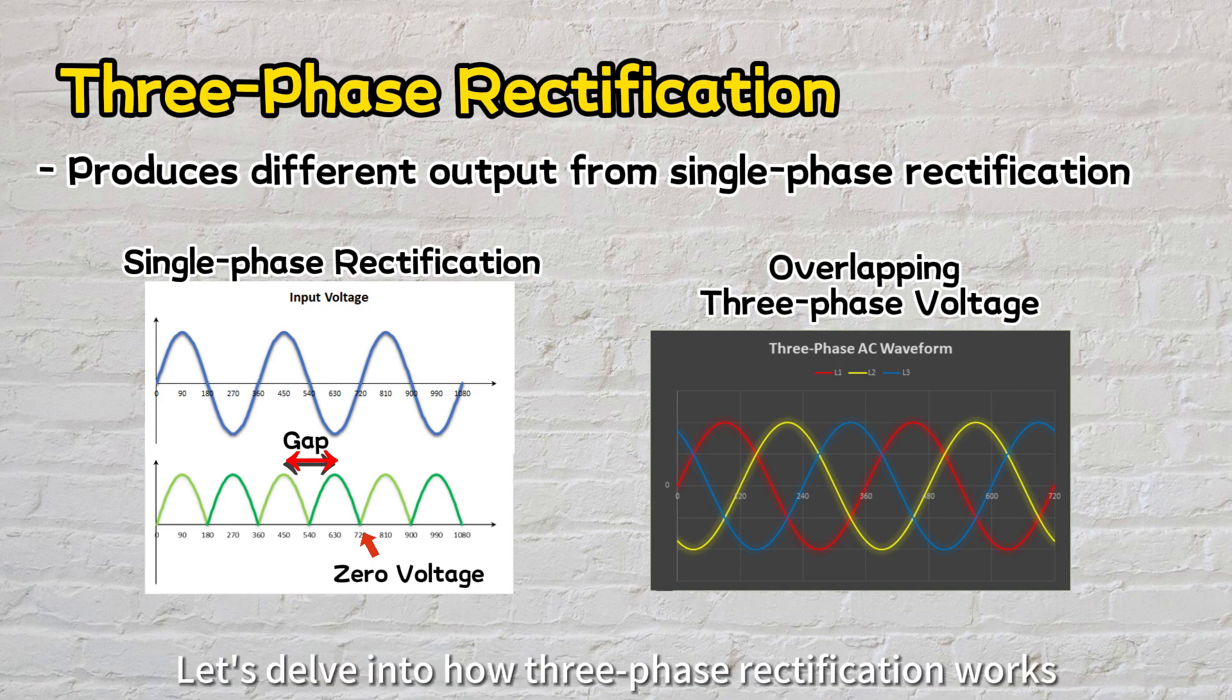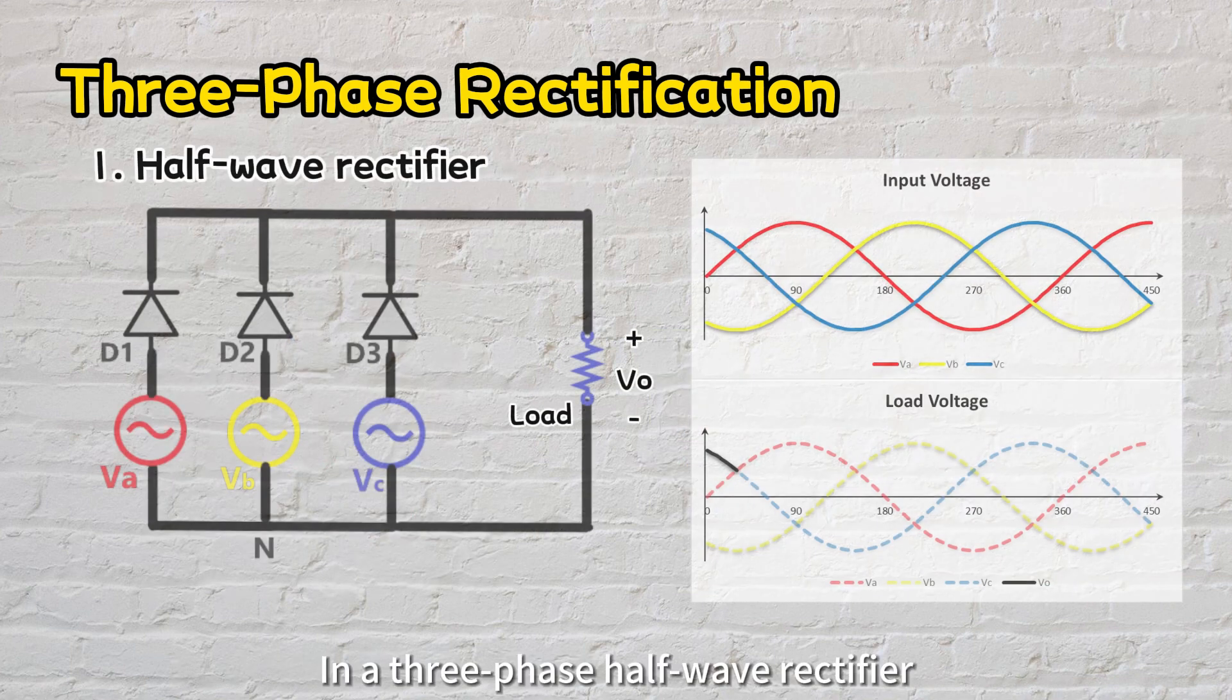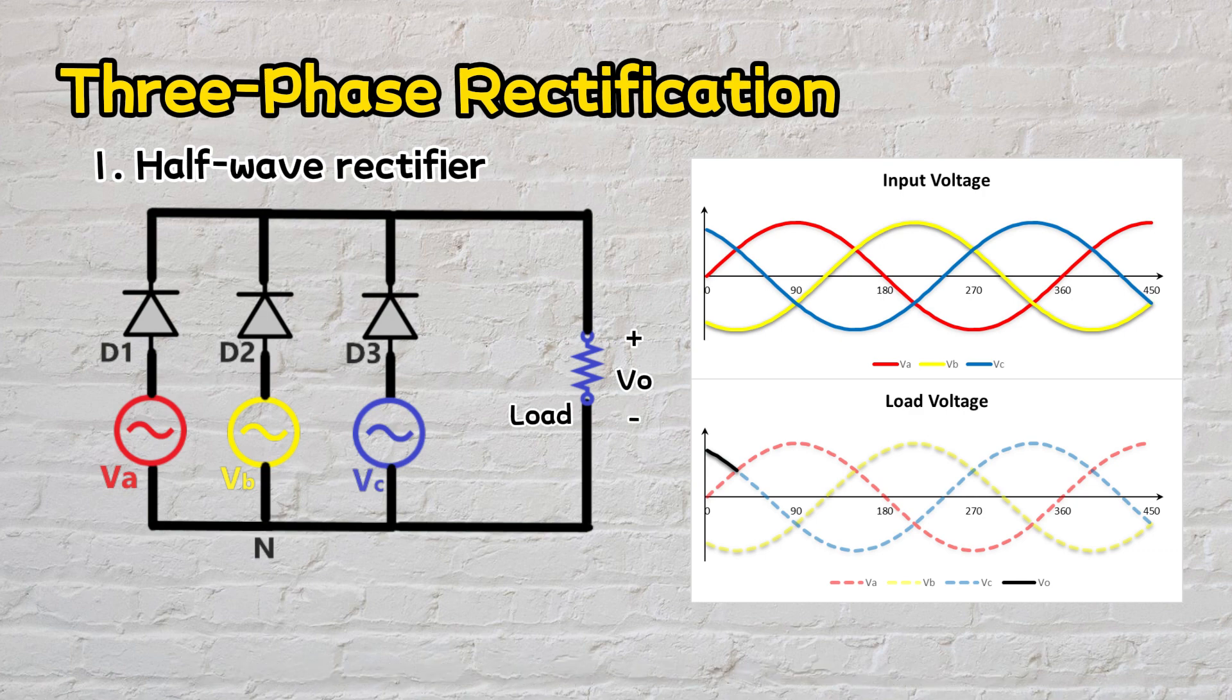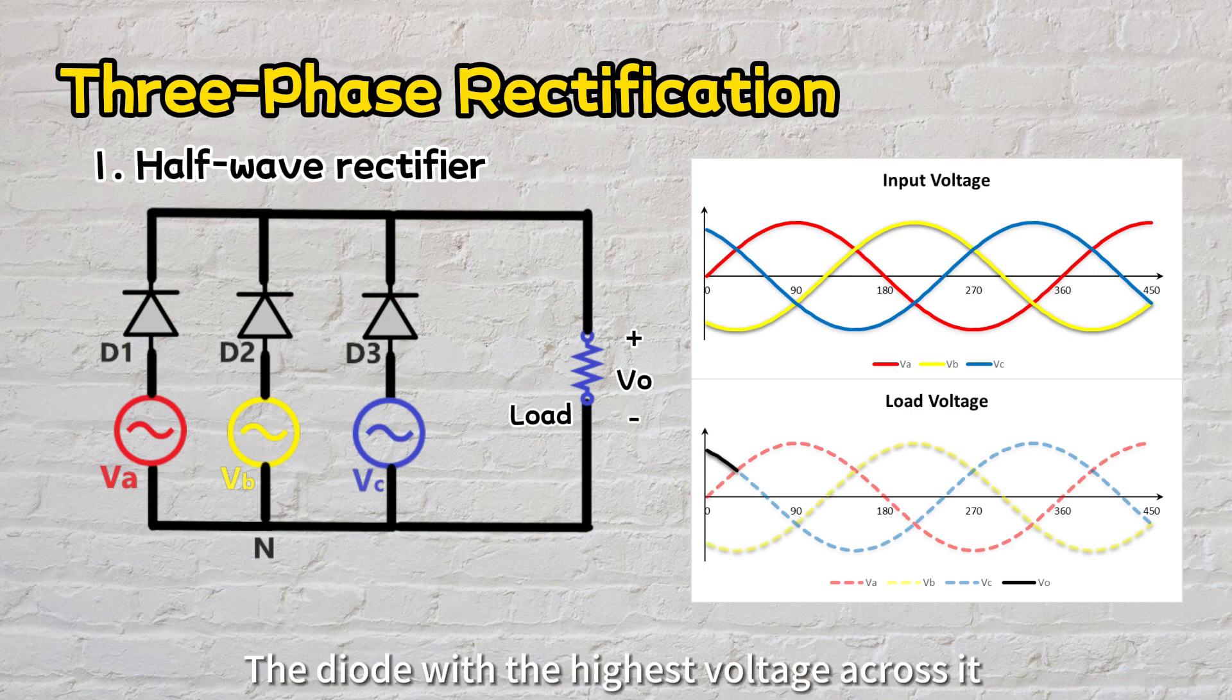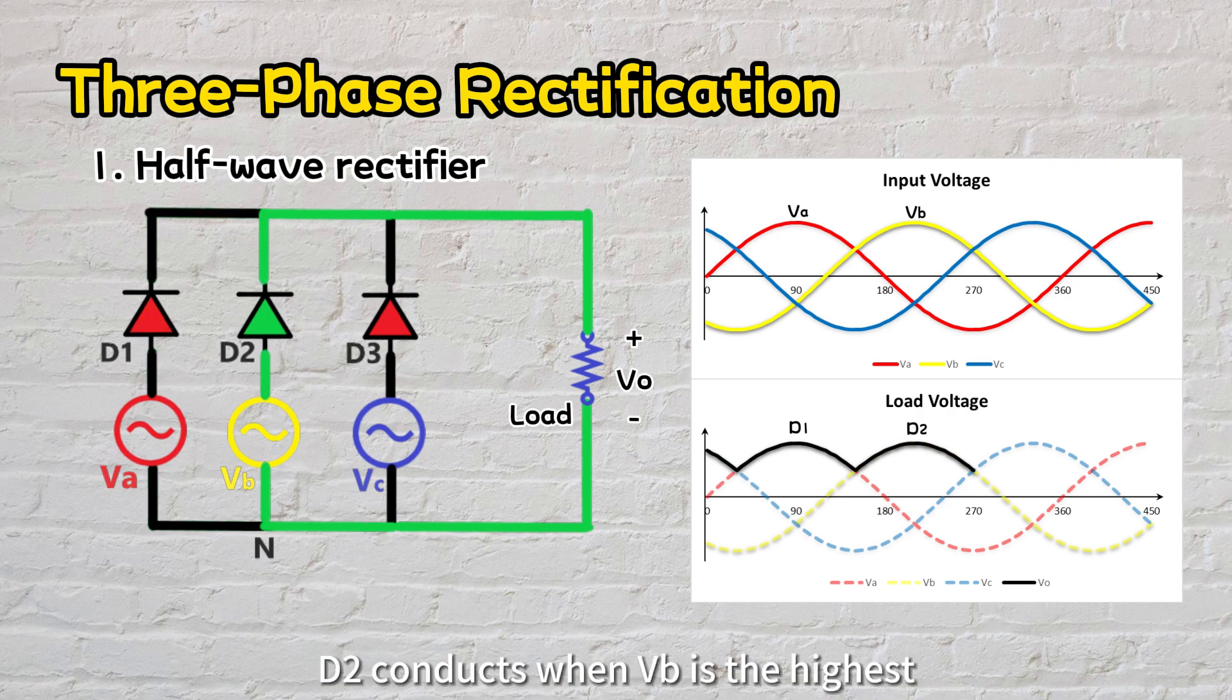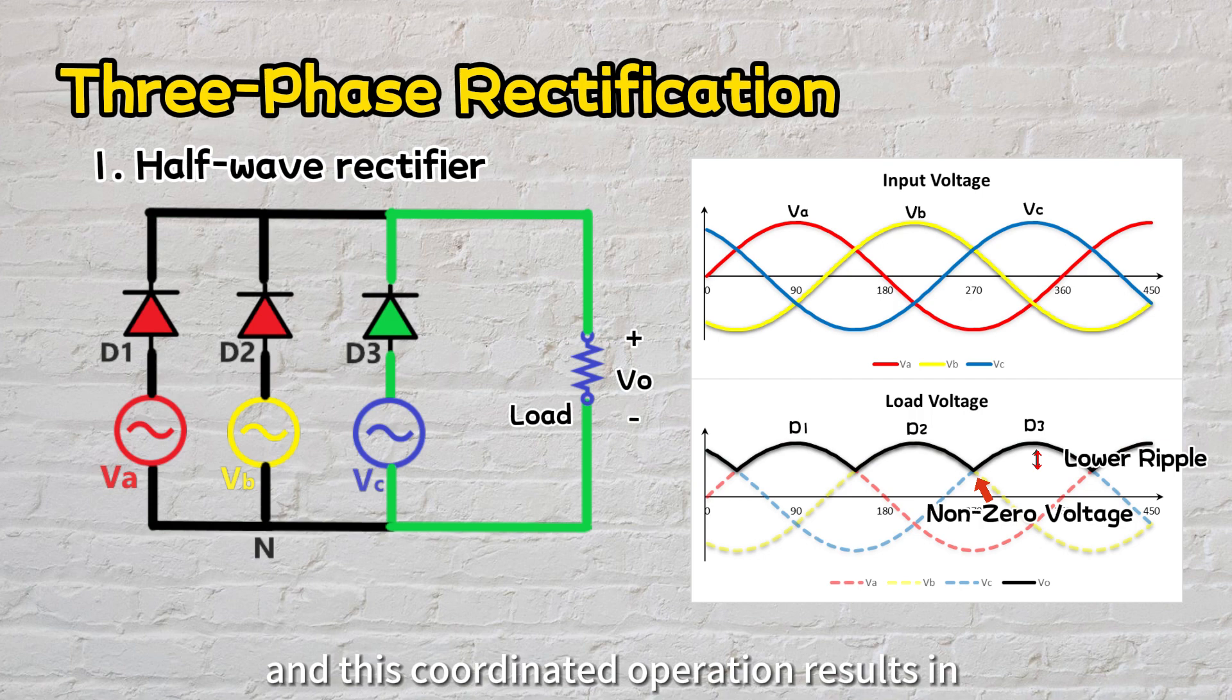Let's delve into how three-phase rectification works. It can also be classified into half-wave or full-wave rectification. In a three-phase half-wave rectifier, three diodes labeled D1 to D3 are being employed. Each diode is connected to a single line and back to the neutral. The diode with the highest voltage across it at any given period conducts. For instance, D1 conducts when VA surpasses VB and VC. Next, D2 conducts when VB is the highest. And lastly, D3 conducts when VC takes the lead. The cycle repeats, and this coordinated operation results in a much lower voltage ripple compared to single-phase rectifiers.